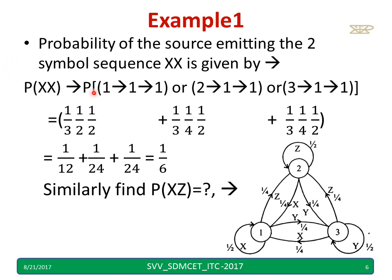To calculate the probability of xx, the probability that the source is in state 1 is 1 by 3, and the probability of moving from 1 to 1 is 1 by 2, then again 1 by 2. For the path through state 2: probability of state 2 is 1 by 3, transition 2 to 1 is 1 by 4, then 1 to 1 is 1 by 2. For state 3: probability 1 by 3, transition 3 to 1 is 1 by 4, then 1 to 1 is 1 by 2. Multiplying and adding all three gives the probability of xx as 1 by 6.